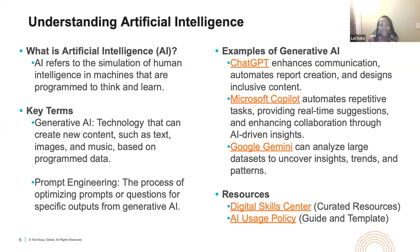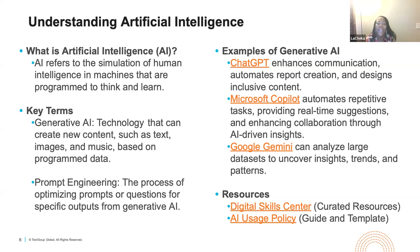This recording and a copy of the slides with all information already hyperlinked will be shared later today. Let's first look at understanding AI. How would you define artificial intelligence? Artificial intelligence involves programming machines to exhibit human-like thinking, learning, and decision-making capabilities. AI imitates human behavior and can be programmed to perform tasks that humans can complete.